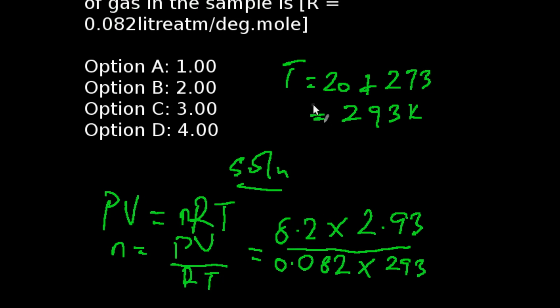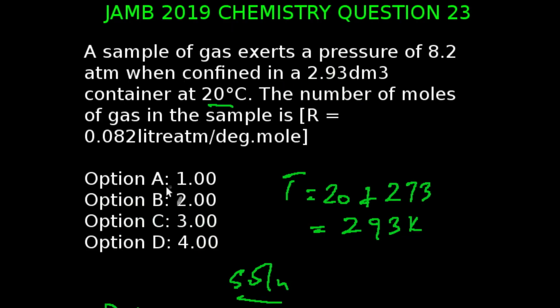Converting our 20 degrees Celsius to Kelvin temperature, we're going to be having 20 plus 273, and that is 293 Kelvin. So, substituting our values for the alphabet in the equation, we have 8.2 times 2.93 all over 0.082 times 293. That's going to give us 1.00, that is Option A.